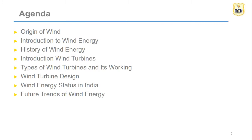Our agenda: the origin of wind - wind energy is generated from the wind, so we are taking the power of nature as a resource for creating energy. Second, introduction to wind energy. Third, the history of wind energy - how it originated and developed up to 2020. Then, introduction to wind turbines, types of wind turbines and their working, wind turbine design, wind energy status in India, and future trends of wind energy. This is our agenda for today's lecture.